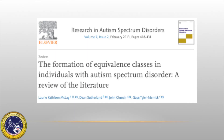McClay and colleagues published a study in 2013 entitled 'The Formation of Equivalence Classes in Individuals with Autism Spectrum Disorder: A Review of the Literature.' The authors reviewed nine studies that empirically investigated the emergence of untaught equivalence relations among individuals with autism. The results demonstrated that while most individuals with ASD are able to form equivalence classes, the findings are variable. There are several examples in the literature where untaught equivalence relations only emerged for some participants or under modified teaching and testing conditions. The authors concluded that further research is needed.